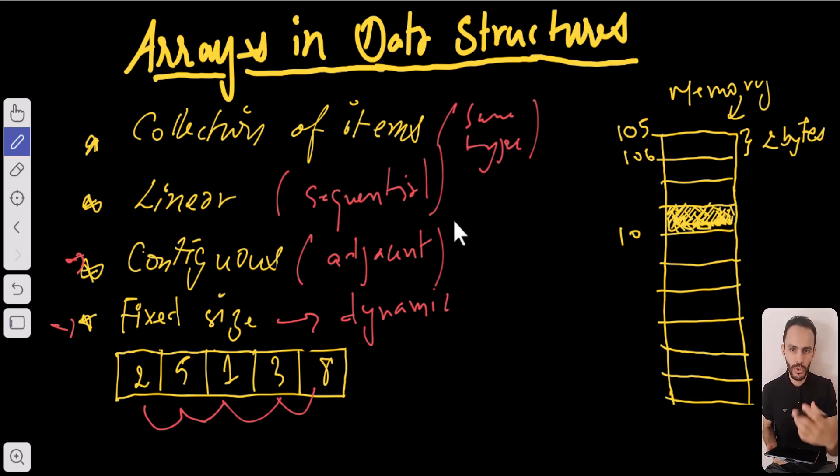In our example here, we have an array of five elements. Each element in the array is identified by what we call an index, starting from index zero, then one, then two, and so on.